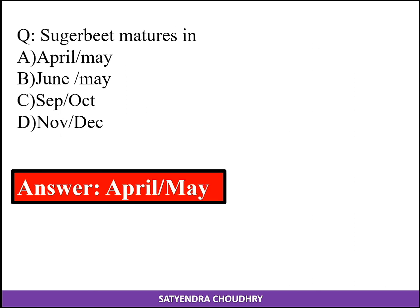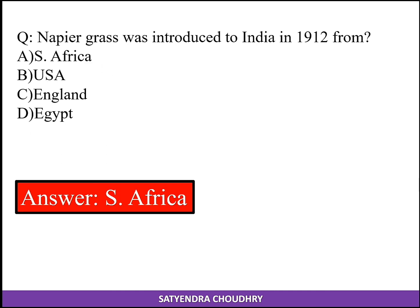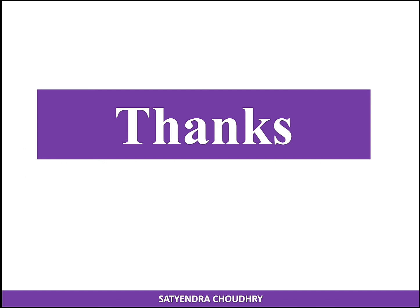Sugar beet matures in April and May. Napier grass was introduced in India in 1912 from South Africa.